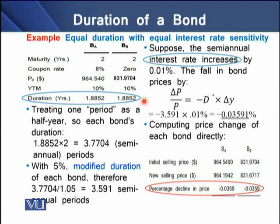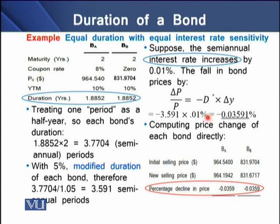If we treat one period as a half year, then each bond's duration is 3.7704 semiannual periods. To determine the modified duration at the 5% semiannual rate, we divide this nominal duration by 1.05, giving both bonds a semiannual modified duration of 3.591 periods. Now, suppose the semiannual interest rate increases by 1% — what will be the effect on bond prices? There would be a fall in the price. Putting this into the modified duration formula, we get a decline of negative 0.03591 in bond prices.